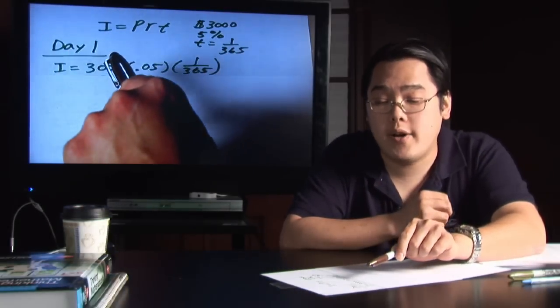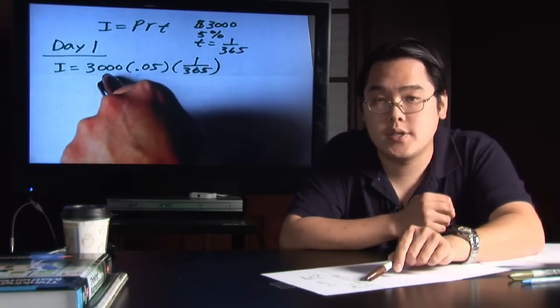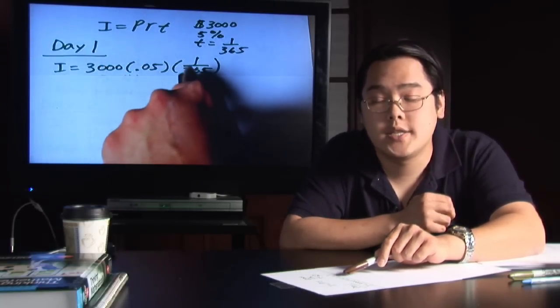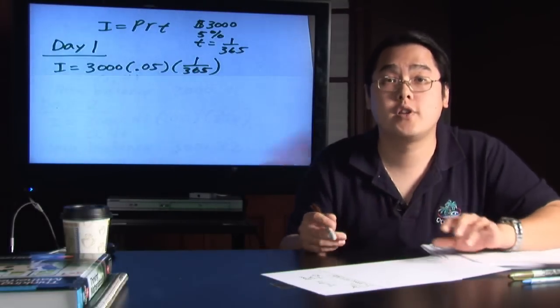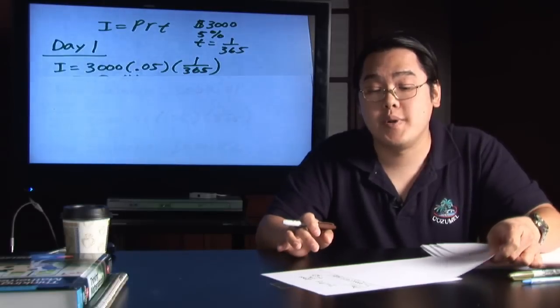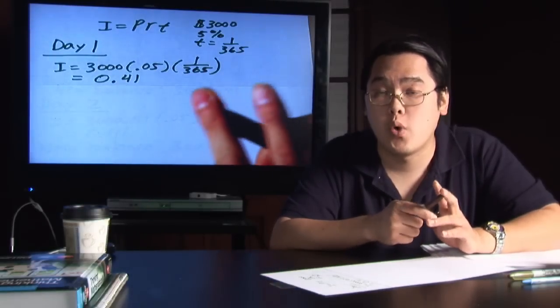Now when you have your calculator, plug it in exactly like this, 3,000 times .05 times 1 divided by 365, and what you will get rounded to the nearest cent is going to be 41 cents. So that's the amount of interest you're going to earn on day one.